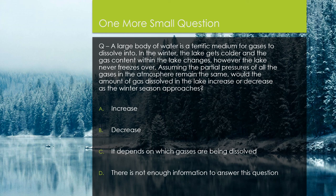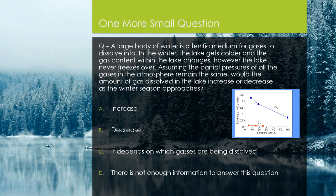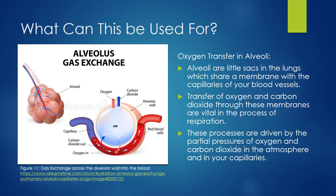Here we have one more quick question just breezing over some of the theory we have practiced previously. A large body of water is a terrific medium for gases to dissolve into. In the winter, the lake gets colder and the gas content within the lake changes. However, the lake never freezes over. Assuming the partial pressures of all the gases in the atmosphere remain the same, would the amount of gas dissolved in the lake increase or decrease as the winter season approaches? From what we have covered previously, the solubility of gases is negatively affected by increases in temperature. As temperature decreases, the concentration of gases in the lake will increase as the lake gets colder.